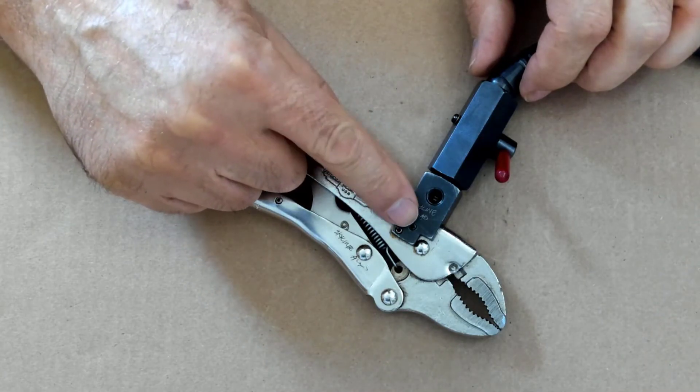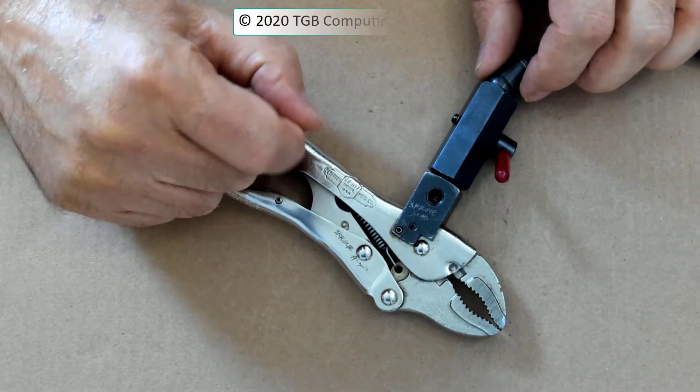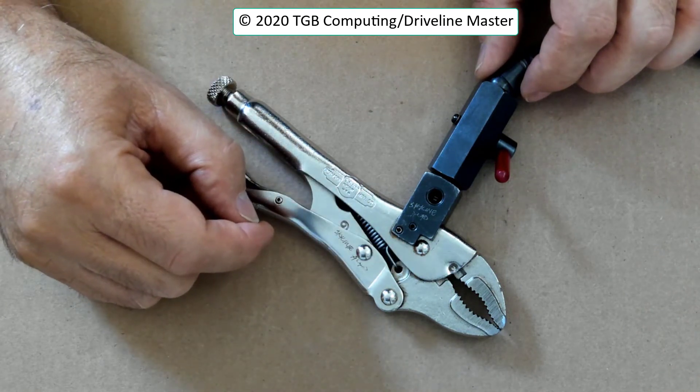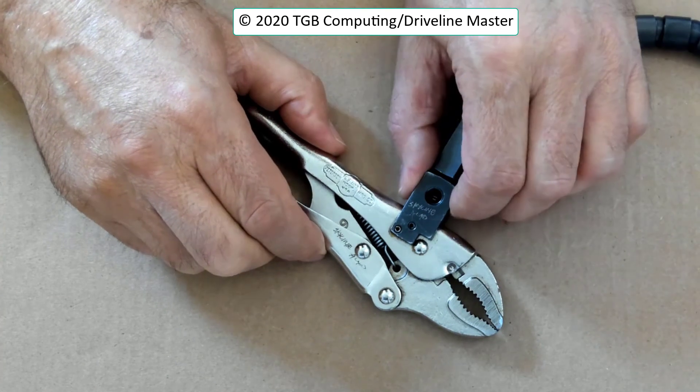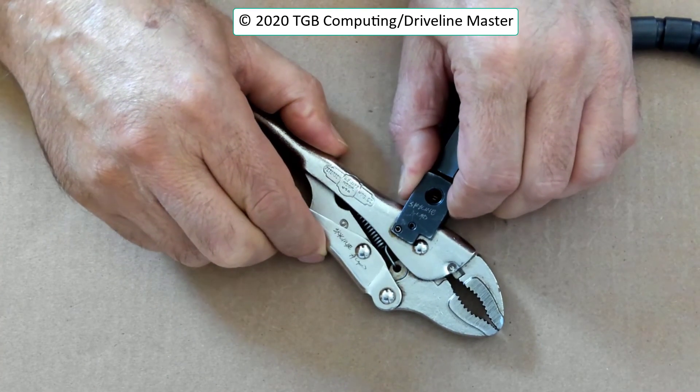Also watch these roll pins. Some less expensive designed vise grip dial indicator mounts, these roll pins will come loose. It will wiggle back and forth and that will affect your reading.